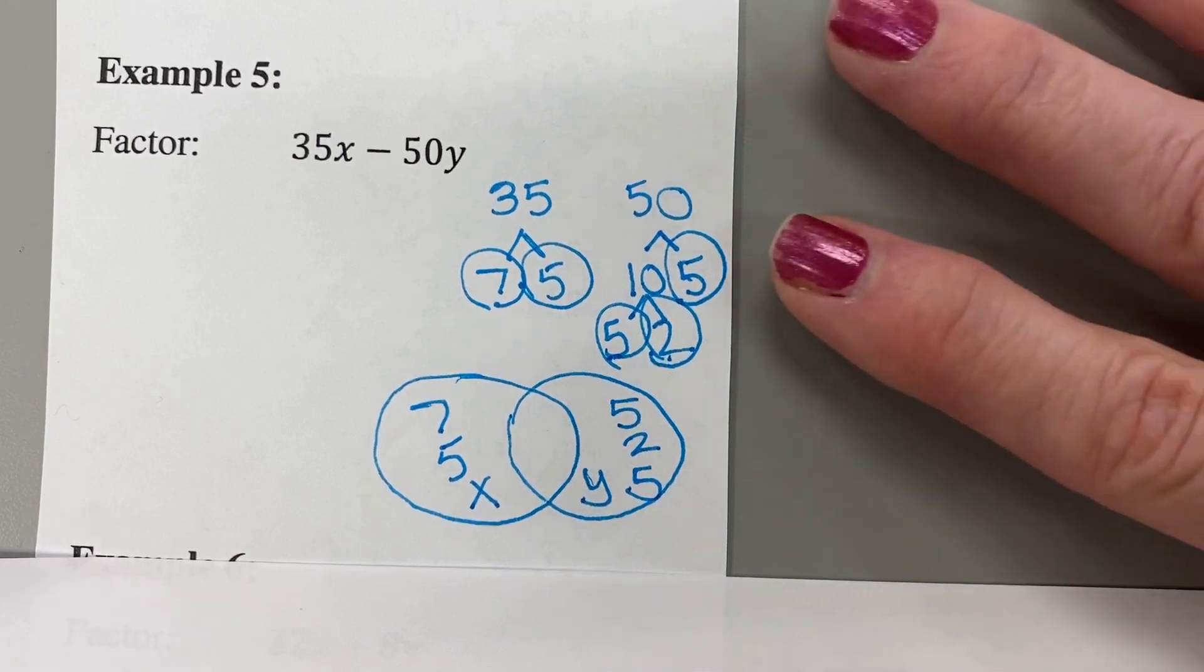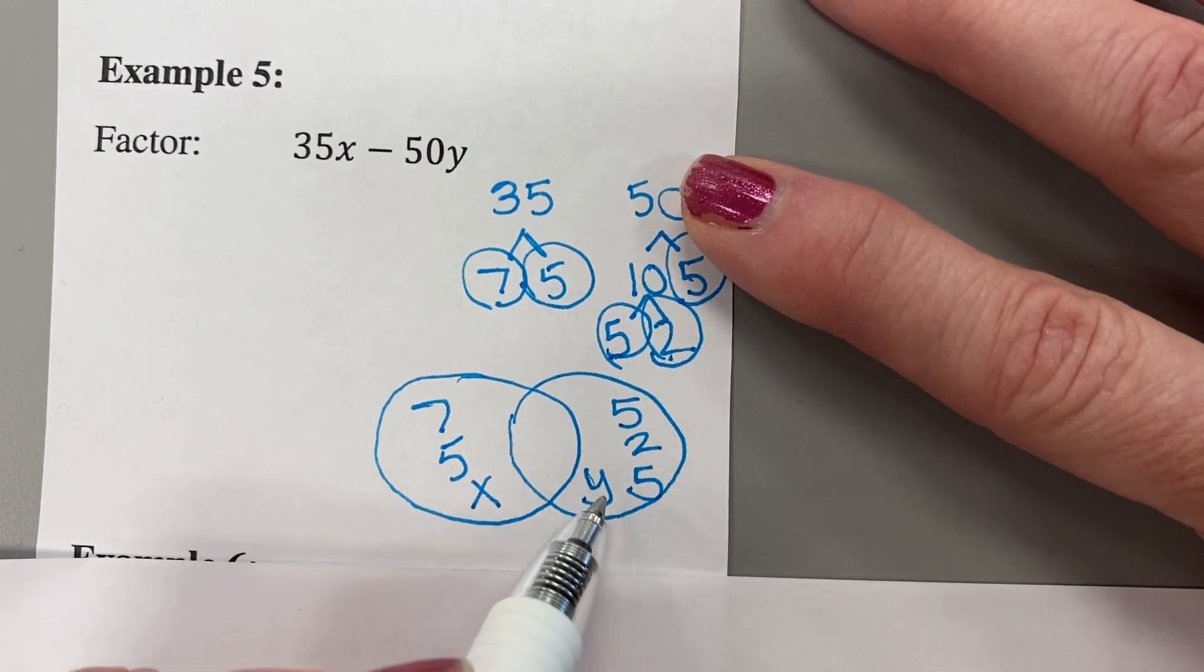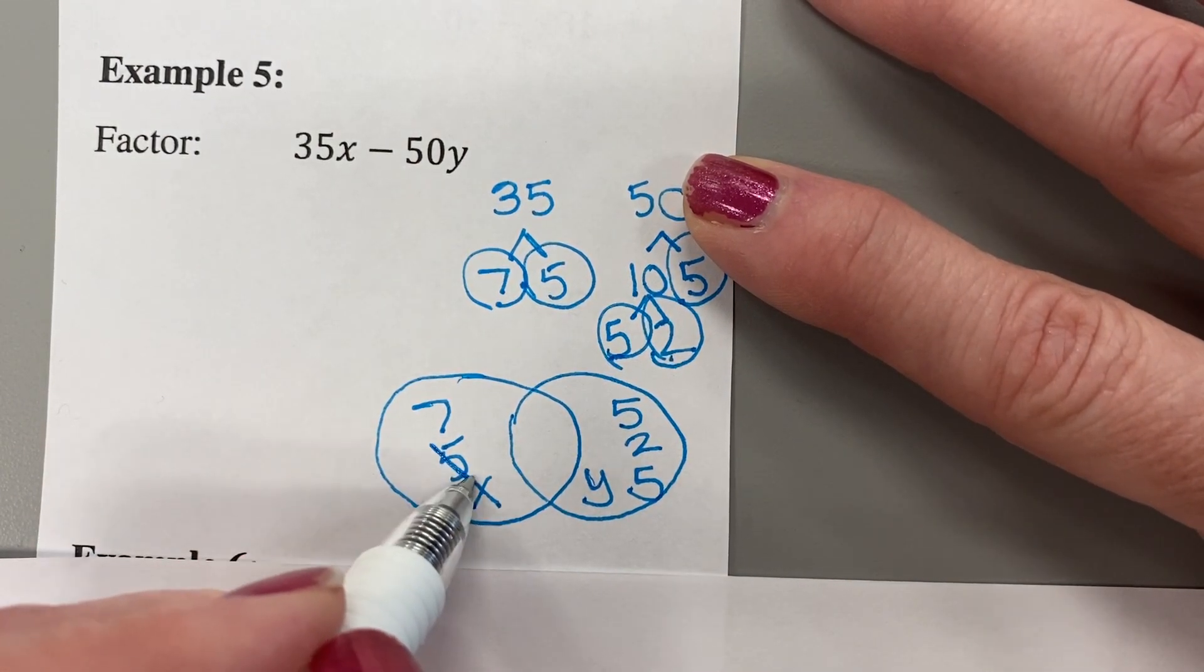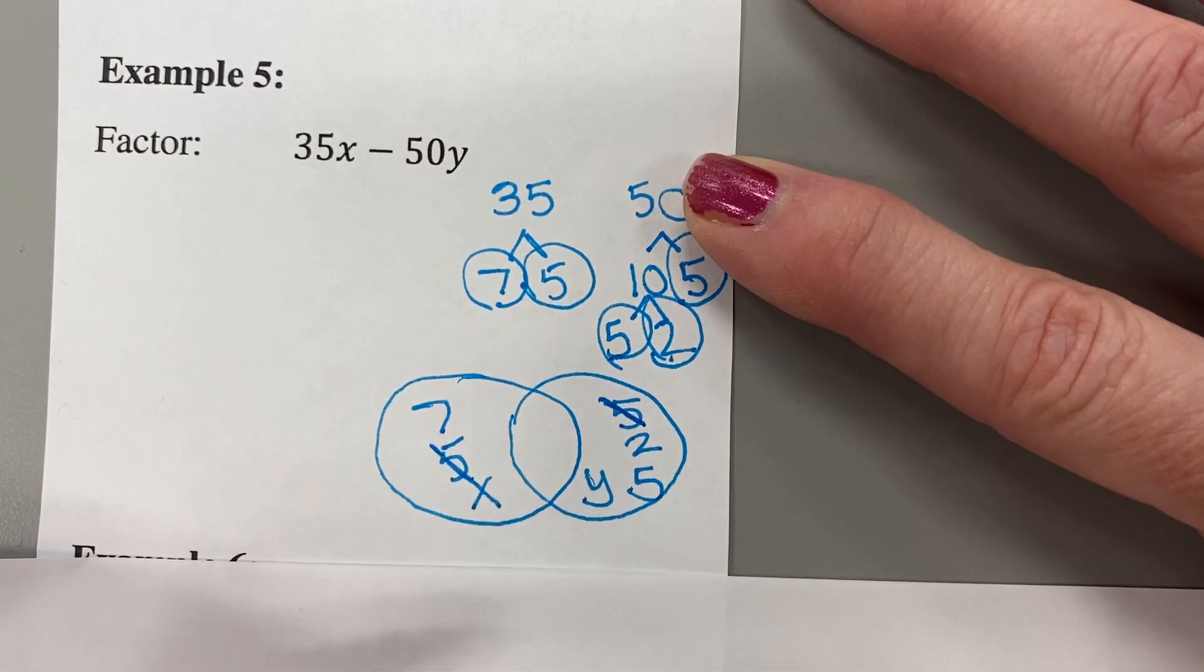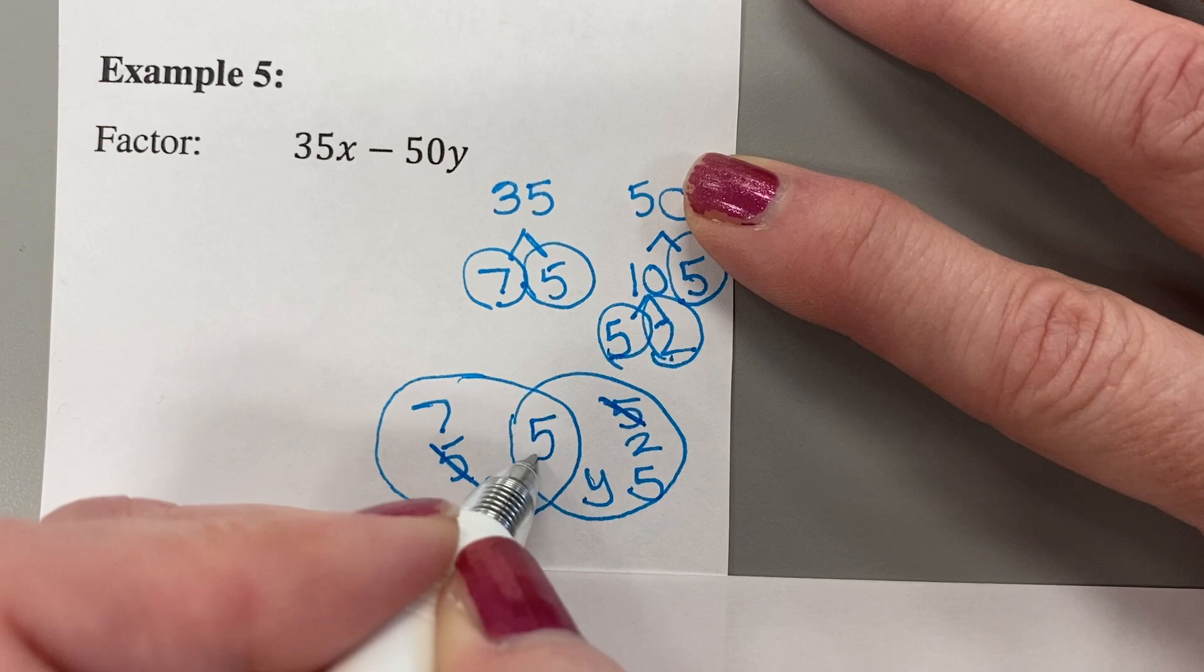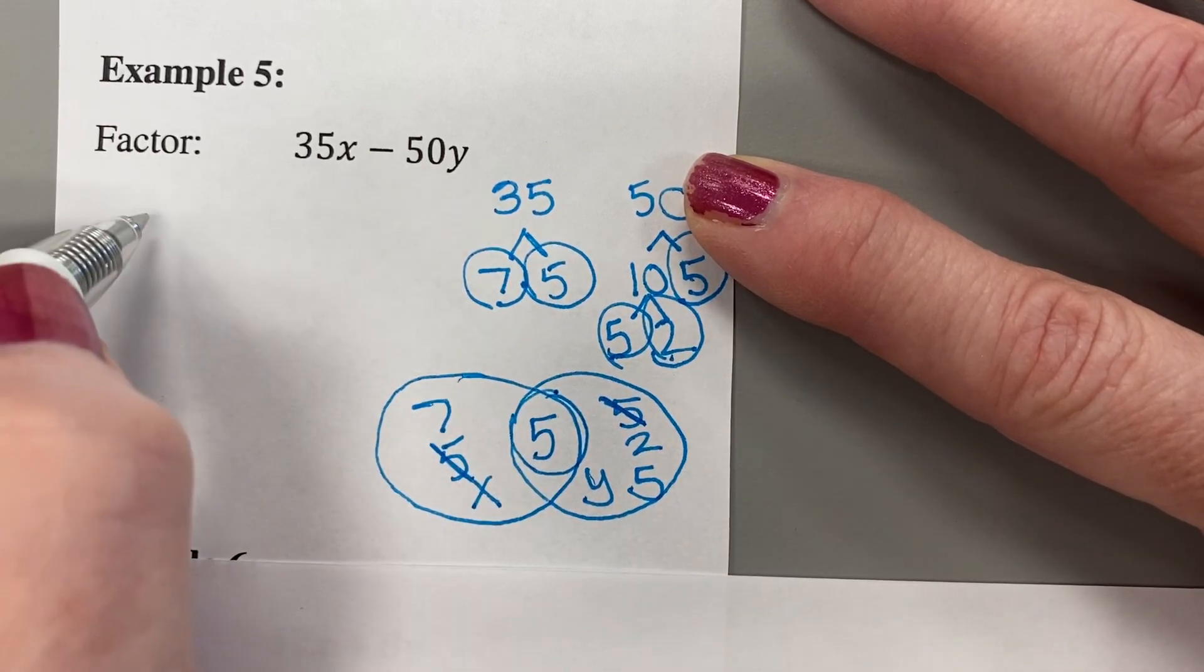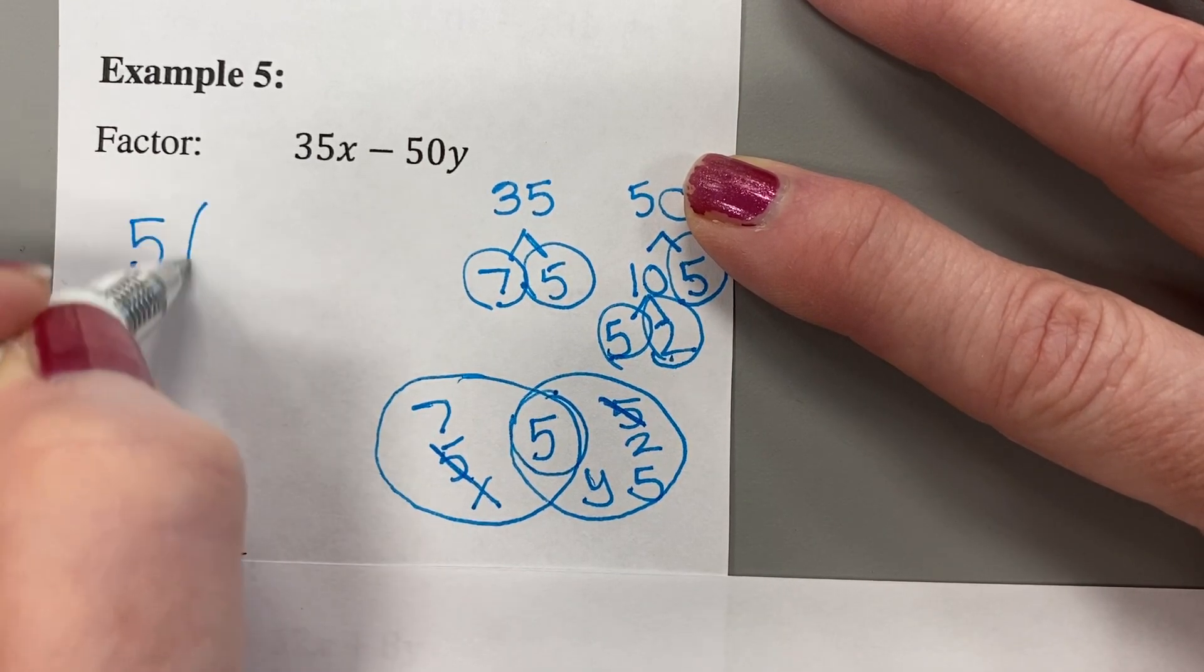Okay. What do we have in common? Well, we have a 5 for sure. And I think that's it. So 5 will be the GCF. That floats to the outside. We open parentheses.